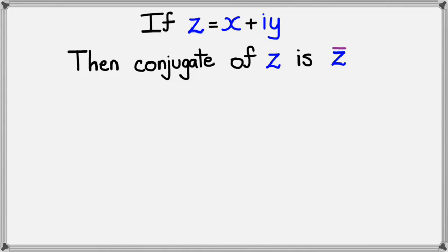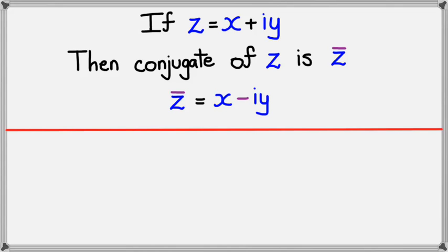Now what does a conjugate mean? It basically means just the imaginary part will become minus. So in other words, z conjugate would equal x minus iy. That's basically the idea of complex conjugates.